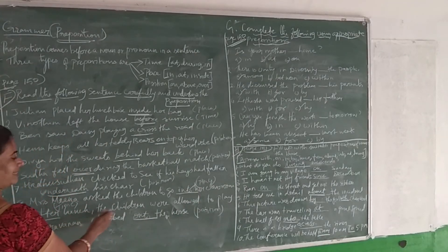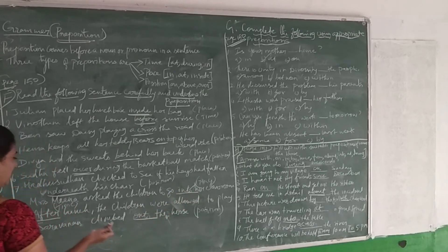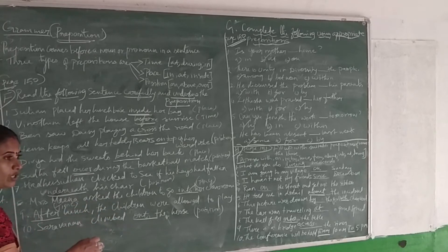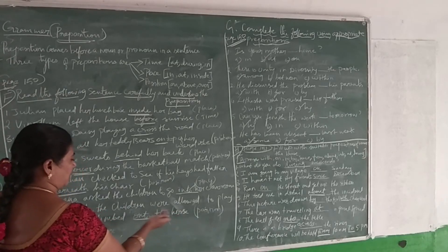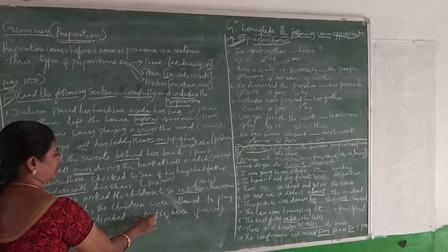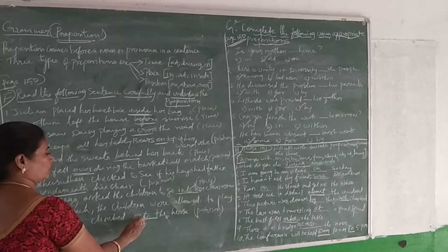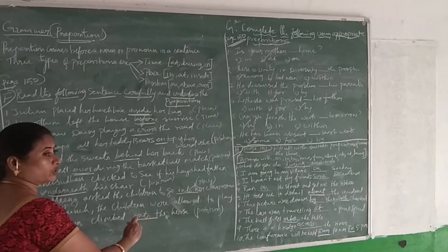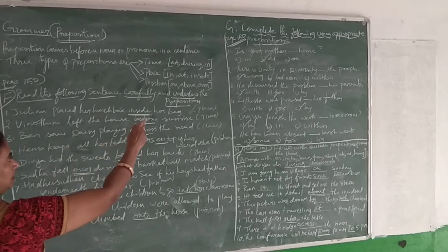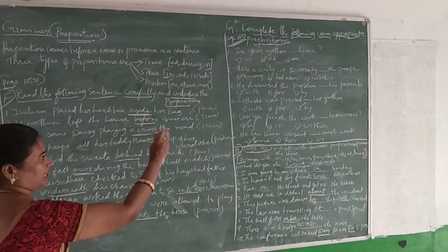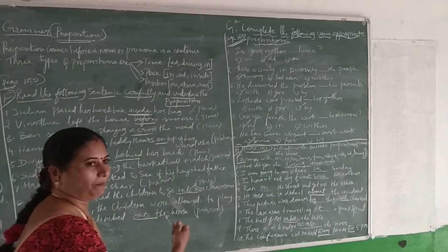Mrs. Meena asked the children to go into her classroom. 'Into' denotes the preposition that belongs to place preposition. Next: 'After lunch, the children will go to play.' 'After' denotes the preposition that denotes time preposition. Last one: 'Send around the house.' 'Onto' relates to the position preposition. So by this you have completed underlining the prepositions and denoting what type they belong to.